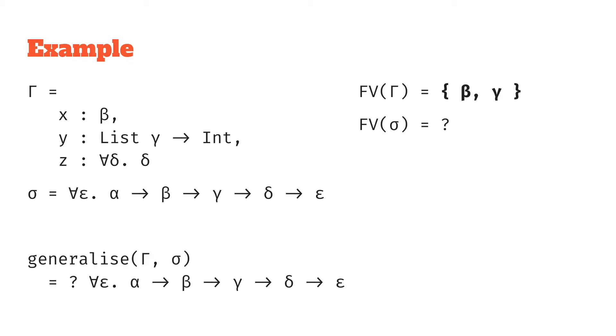In our type sigma we've got for all epsilon alpha to beta to gamma to delta to epsilon. From here the first four are free but the epsilon is bound by that for all quantifier so it's alpha, beta, gamma, delta.